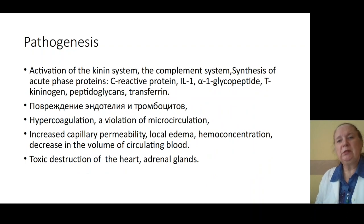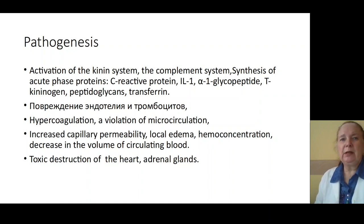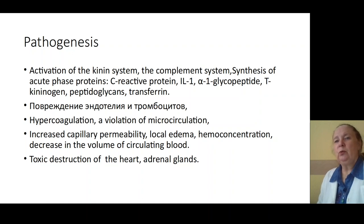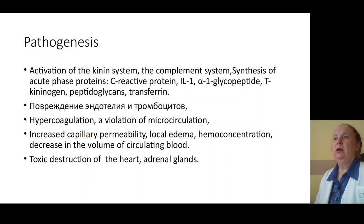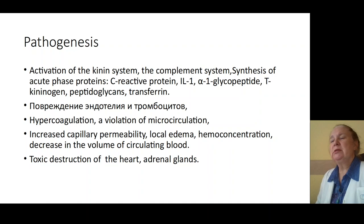Activation of the kinin-kallikrein system, activation of the complement system, synthesis of acute phase proteins, because activation of phagocytes, macrophages, and neutrophils — synthesis of C-reactive proteins, interleukins, interleukin-1, alpha-glycopeptide, T-kinin, peptidoglycans, transferrin. All these proteins cause increasing permeability of blood vessels, causing progressive infection, metabolic disorders, disorders of function of internal organs, destruction of endothelium of capillaries, formation of microthromboses of blood vessels, ischemia of internal organs, and metabolic disturbances.